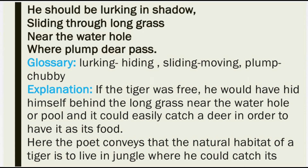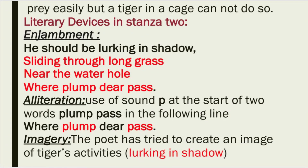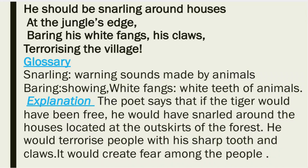He could easily catch a deer in order to have it as his food. The poet conveys that the natural habitat of a tiger is the jungle, where he could catch his prey easily, but a tiger in a cage cannot do so. Literary devices used in stanza 2: enjambment in the lines 'sliding through long grass / near the waterhole where plump deer pass'; alliteration — use of the sound 'p' in 'plump' and 'pass'; and imagery — the poet creates an image of the tiger's activities in 'lurking in shadow.'